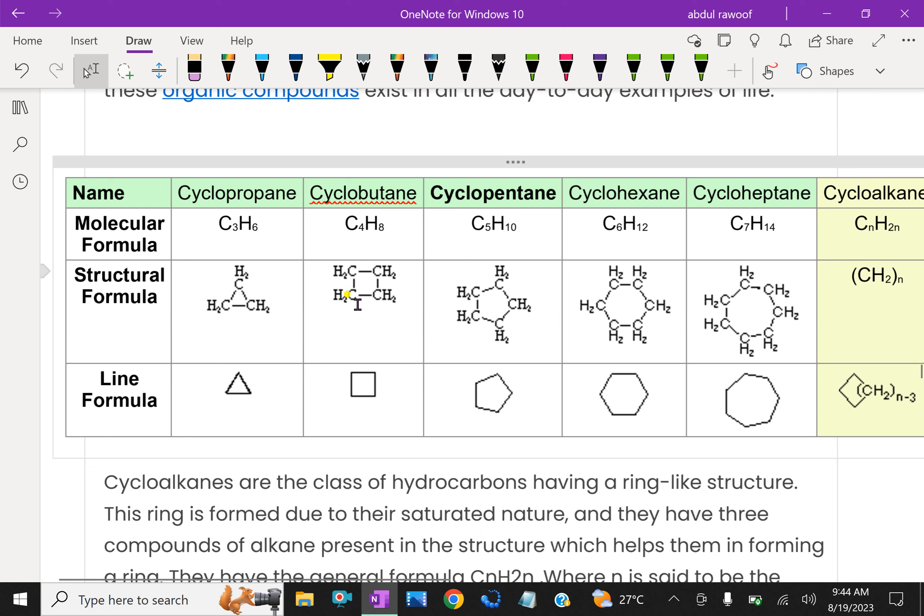Here in a square, all corners are carbon and H2 is connected together. Cyclopentane is like here, cyclohexane, cyclopentane, cyclohexane.